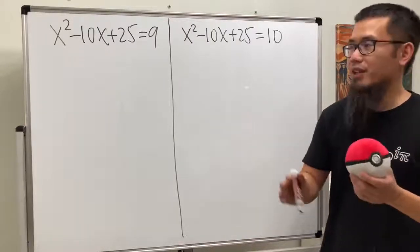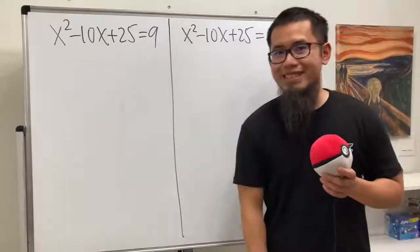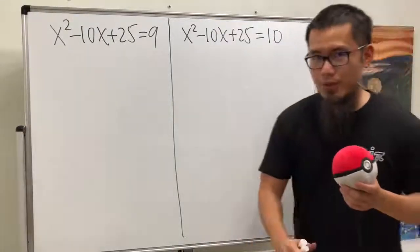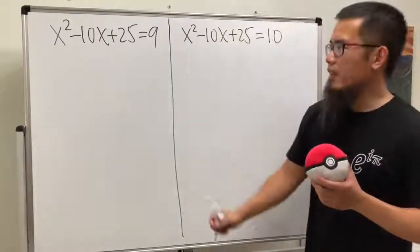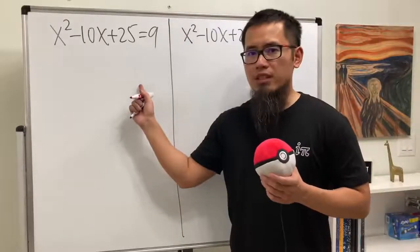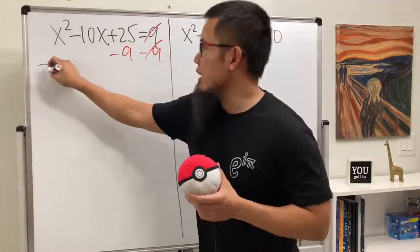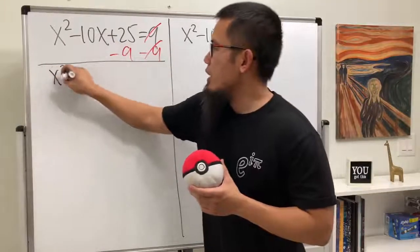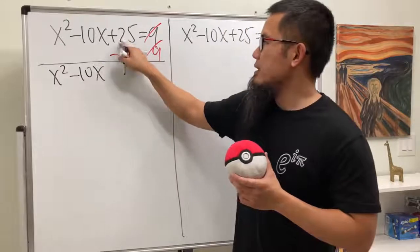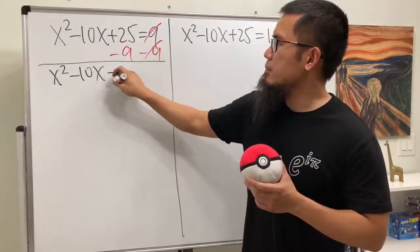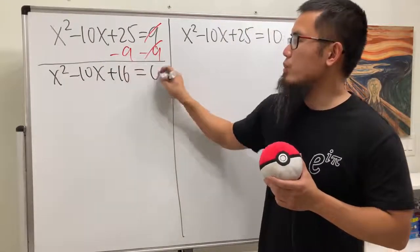Again, pause the video and try it first. Ready? Okay. So, I think most of you guys will say this is easier because we can just minus 9 on both sides to begin with, cancel this out, and then we get x squared minus 10x. This minus that is plus 16, and that's equal to 0.